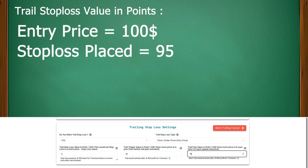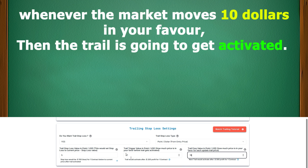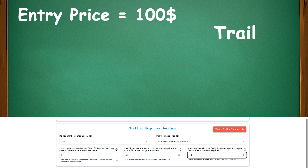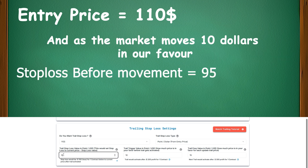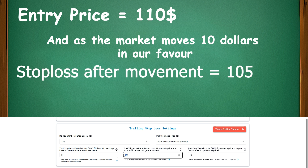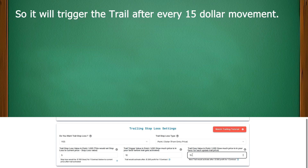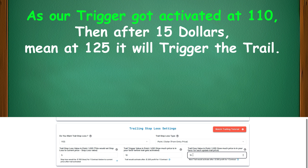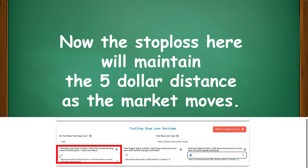Trail trigger value is used for activating the trigger. As we have put 10, whenever the market moves $10 in your favor, the trail is going to get activated. Let's say our entry price is $100. So when it moves to 110, the trail gets activated — but this works for the first time only. As the market moves $10 in our favor, previously our stop loss is at 95, which then moves to 105. For trail frequency value, as we have put 15, it will trigger the trail after every $15 movement. As our trigger got activated at 110, then after $15, at 125, it will trigger the trail. The stop loss will maintain the $5 distance as the market moves.